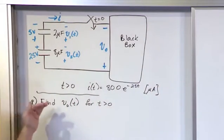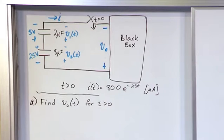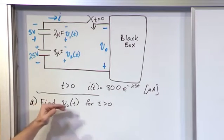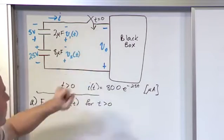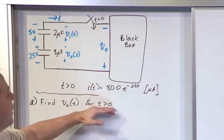What we're asked to do - we're going to have several parts to this question. The first part is find V0 of t, this voltage across the black box, as t goes to zero.